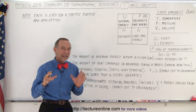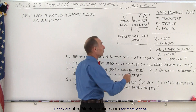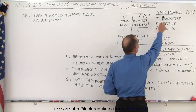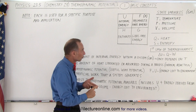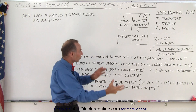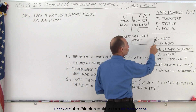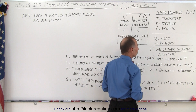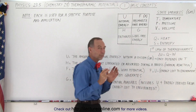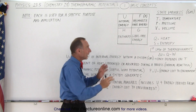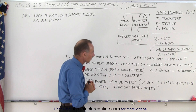To understand these potentials better, we also need to understand the concept of state variables — typically used for a gas — which include temperature, pressure, and volume. We also need to understand Q, which represents heat, and S, which represents entropy. All of these play a role in the definitions of the four thermodynamic potentials.